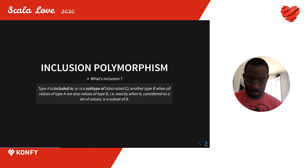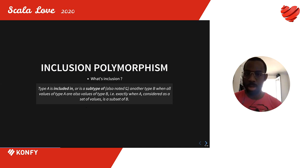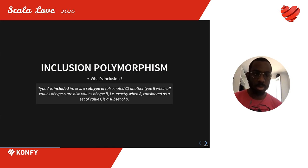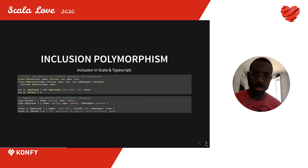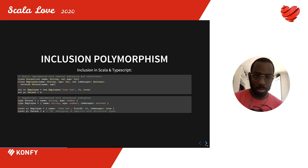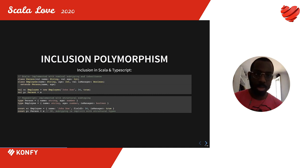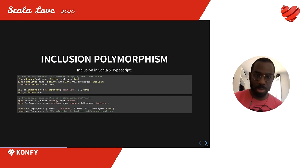First, a definition of inclusion: type A is included in, or is a subtype of, type B when all values of type A are also values of type B — exactly when A, considered as a set of values, is a subset of B. In Scala, we achieve inclusion through subtyping and inheritance. If I have a class 'Person' with fields name and age, and a class 'Employee' which extends 'Person' with an extra field 'isManager', then an employee can be assigned to a variable expecting a person. That is inclusion — an employee is also a person.